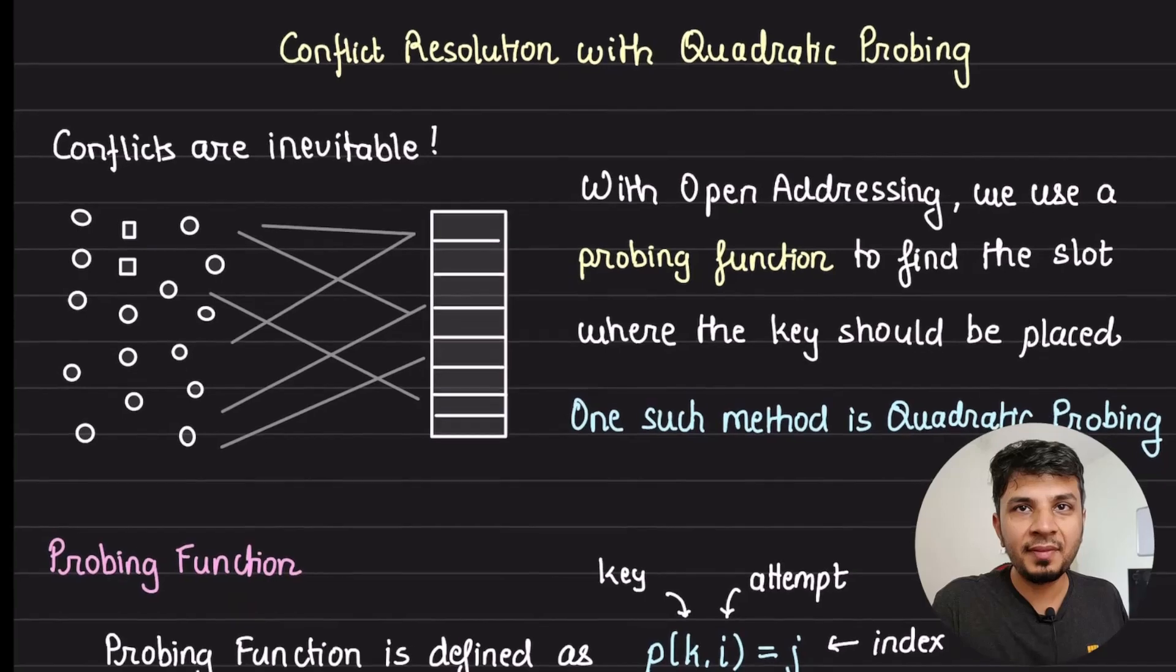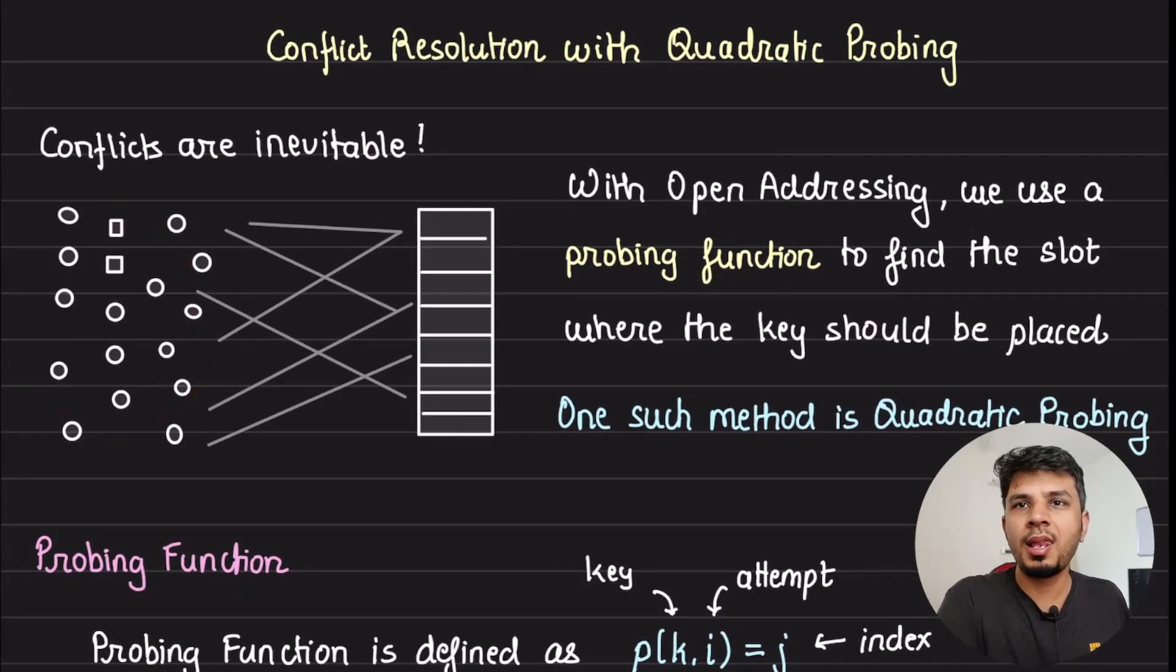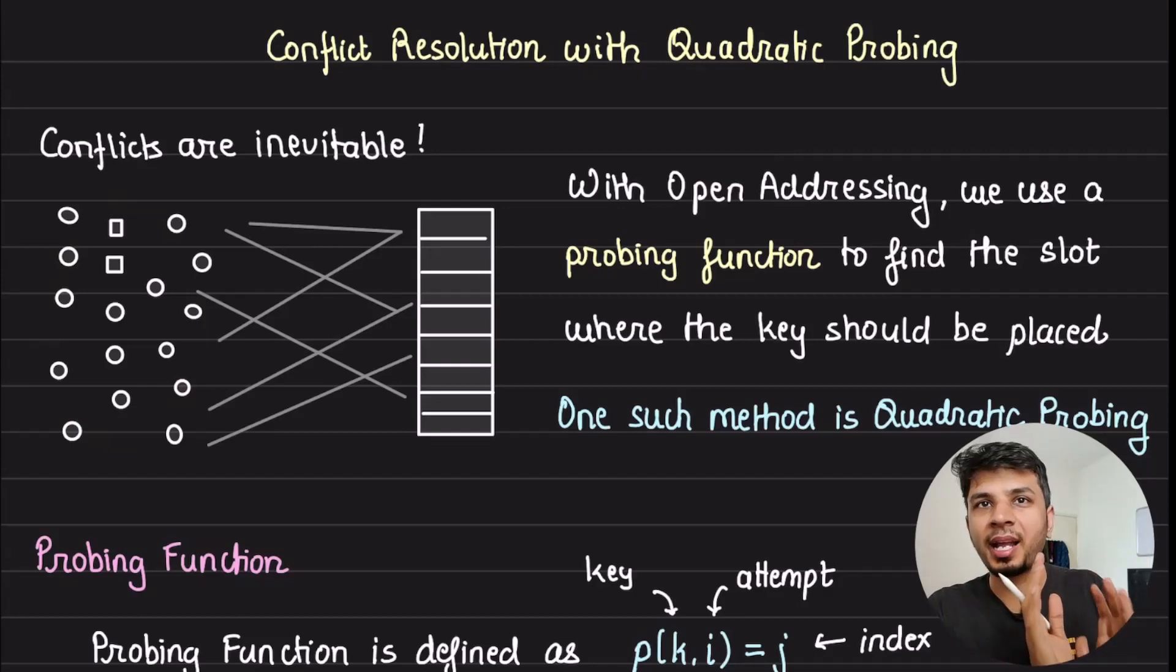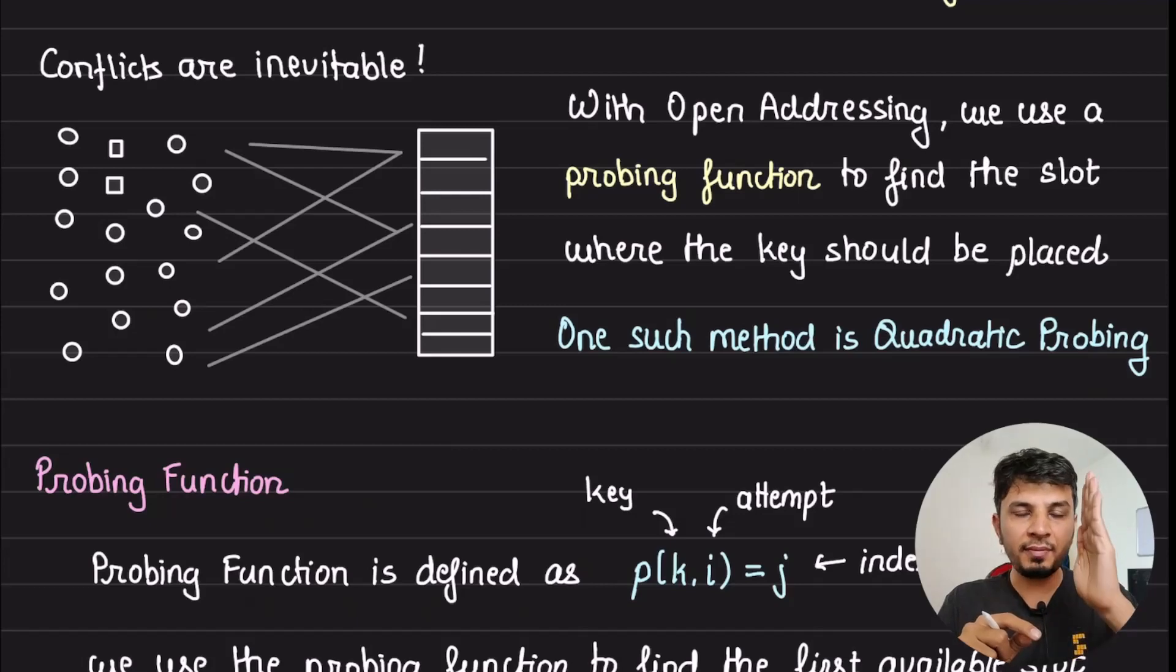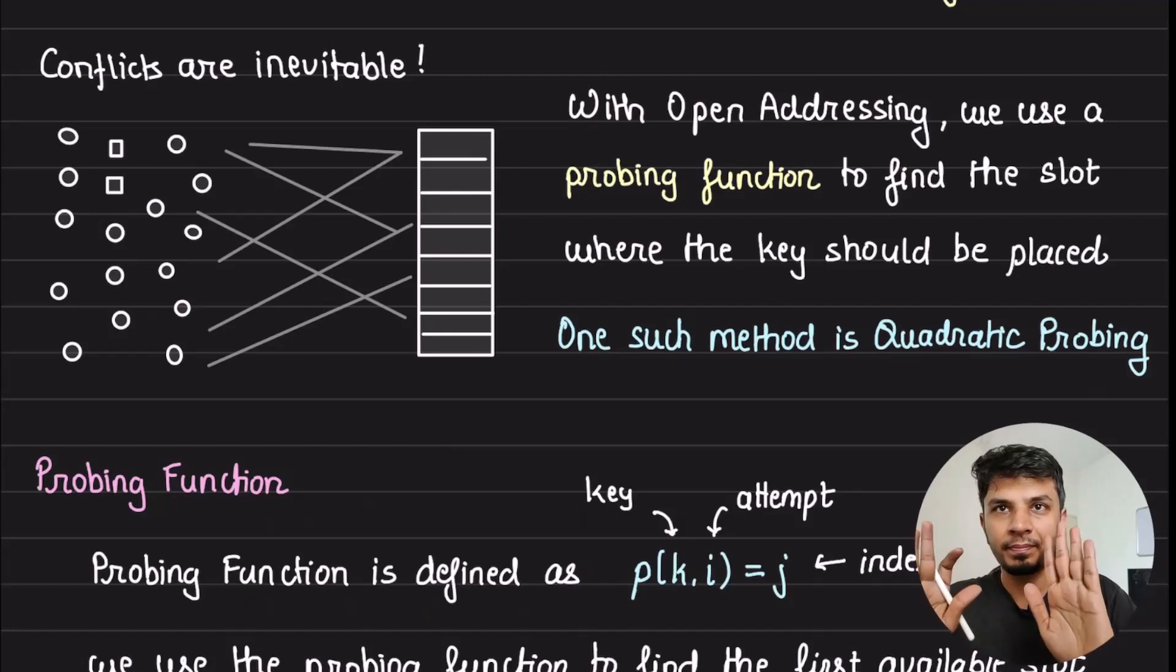Like always, conflicts are inevitable as we are trying to fit a large application key space into a smaller hash table. We are talking about open addressing as a technique to do so, which is very space efficient as we do not require an auxiliary data structure to handle hash table collisions. But how do we find the next available slot in the hash table so that we can place our key at that particular slot in case there is a collision?